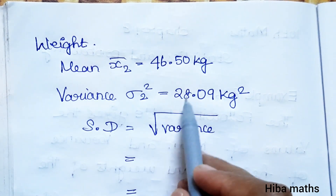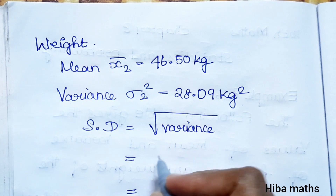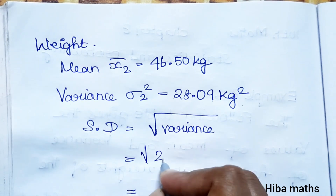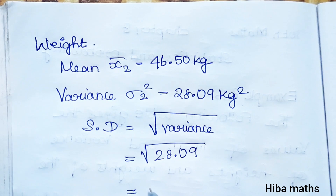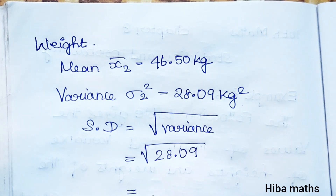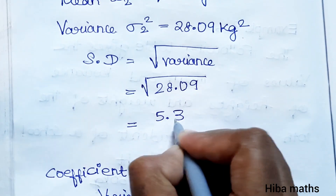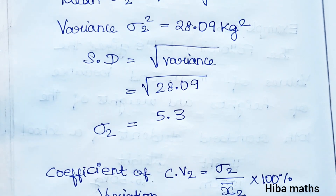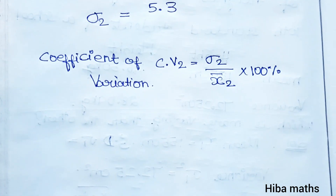For weight: mean is 46.50 kg and variance is 28.09. Standard deviation = √28.09 = 5.3. So the standard deviation value for weight is 5.3.